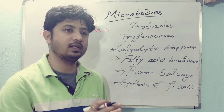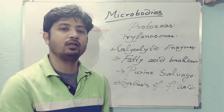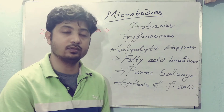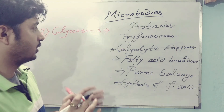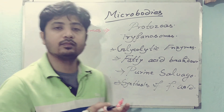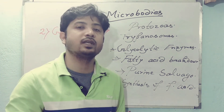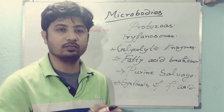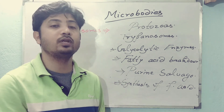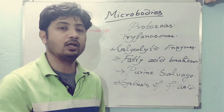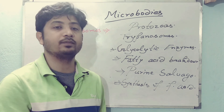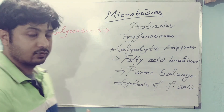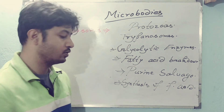Glycosomes help trypanosomes in survival in critical situations. Some reports suggest that glycosomes are derived from peroxisomes, but there is still ongoing work to confirm this hypothesis. The last microbody is hydrogenosomes.